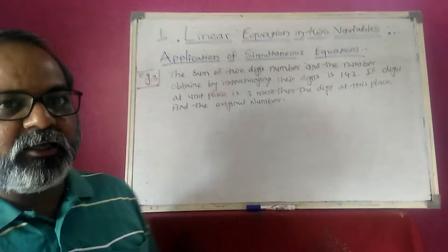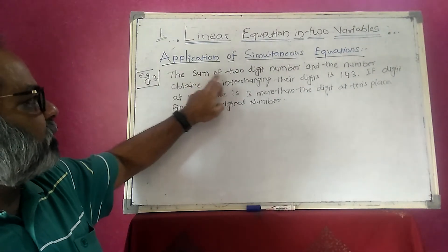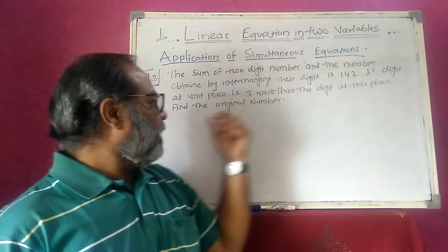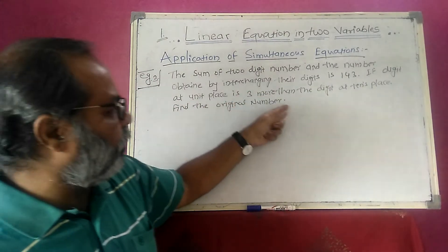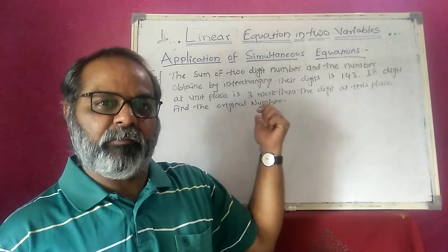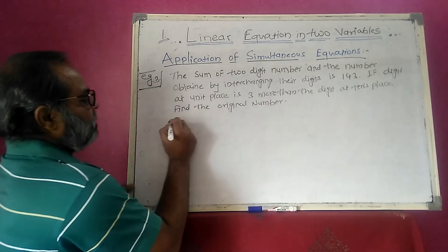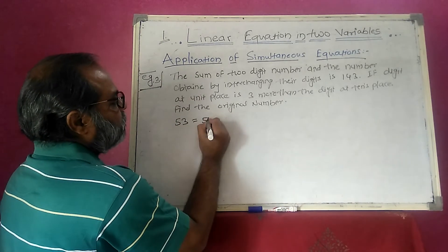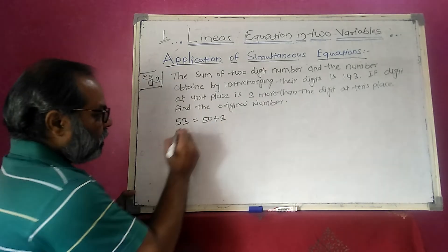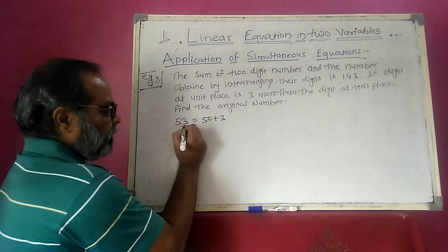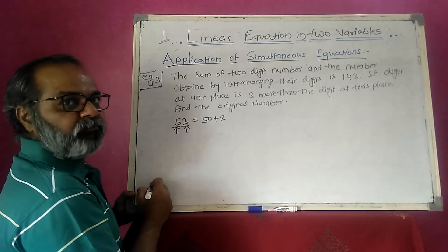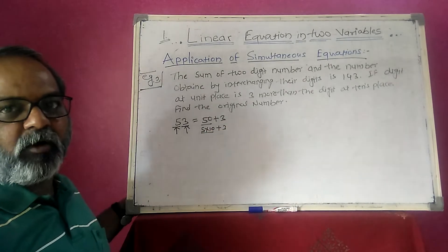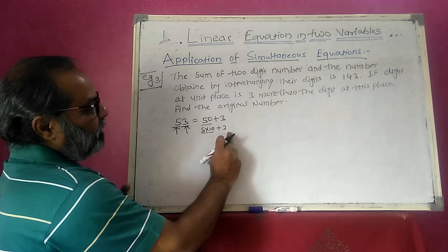For practice, here is another word problem. The sum of a two-digit number and the number obtained by interchanging its digits is 143. If the digit at unit place is 3 more than the digit at tens place, find the original number. Before solving, recall that the number 53, when expanded, is 50 plus 3, meaning 5 is in the tens place (5 times 10) and 3 is in the units place.